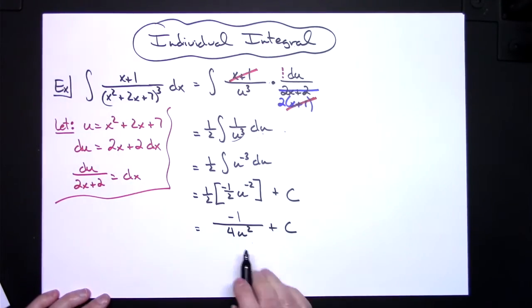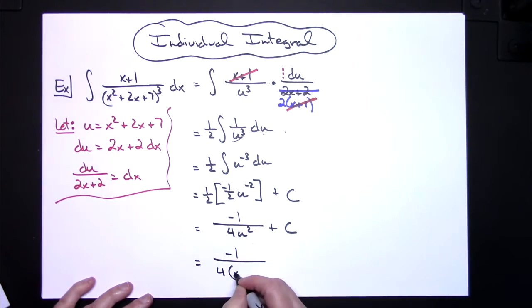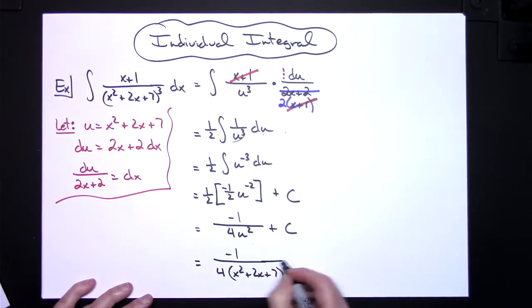My last step would be replacing u with what it equals. So I'll have negative 1 on top, I'll have 4, replacing u with that x squared plus 2x plus 7, and then to the second power and then plus c.